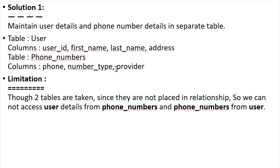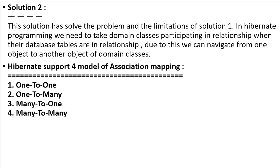If two tables are not in a relationship, we cannot navigate from one object to another. The solution is to use association mapping in Hibernate. Domain classes participating in a relationship are mapped when their database tables are in a relationship, allowing us to navigate from one object to another. We use one-to-one, one-to-many, many-to-many mappings so that fetching one object also gives us details from the associated table.